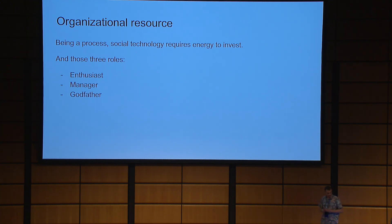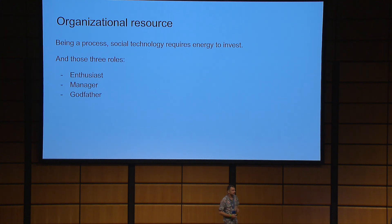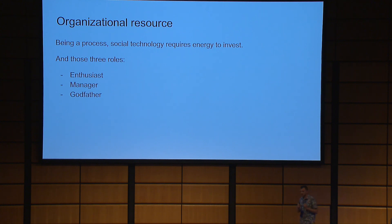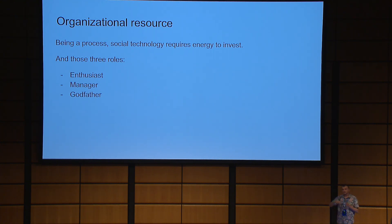Another thing: when we want to apply the technology, we have to have an organizational resource. Organizational resource means someone has to do those steps — someone has to organize the process of communication, of building those periodic events, and keep everything aligned. As a process, it also requires three roles: the enthusiast who loves the process and wants to implement it; the manager who precisely plans events, teaches team members about the process, and keeps everything going; and the godfather, who, if something is going wrong, steps in and says this should be done this way. It's not possible to combine all three roles in one person, so we need at least two people.